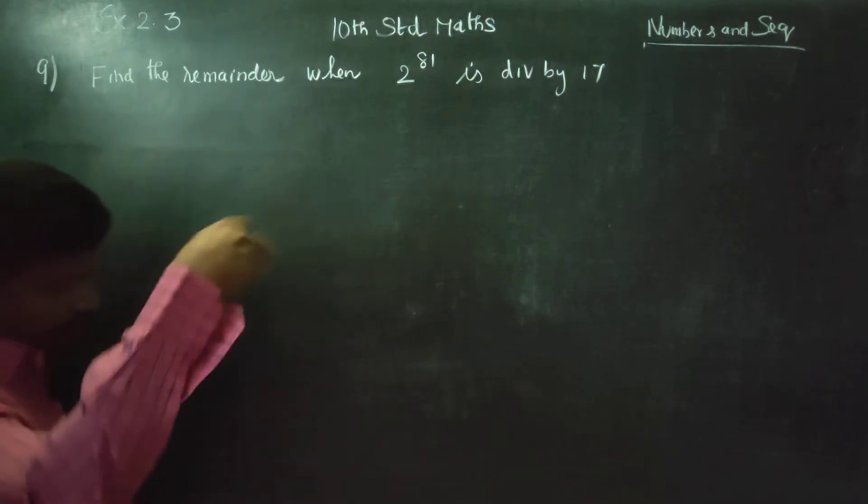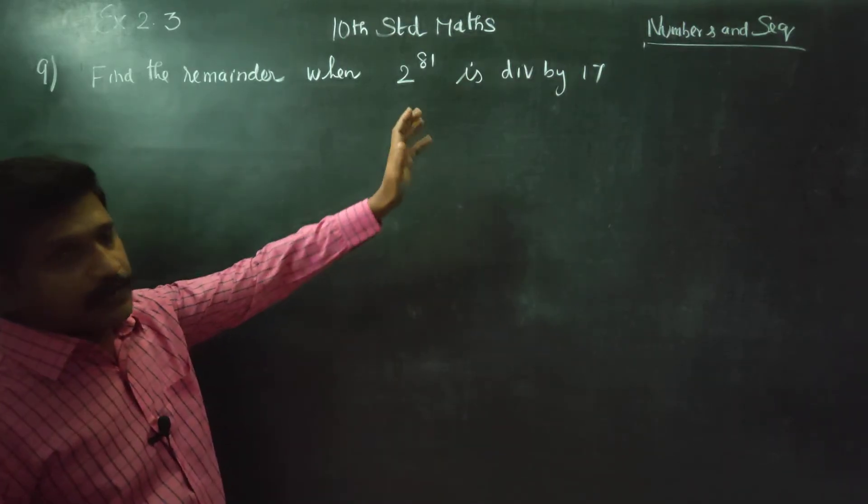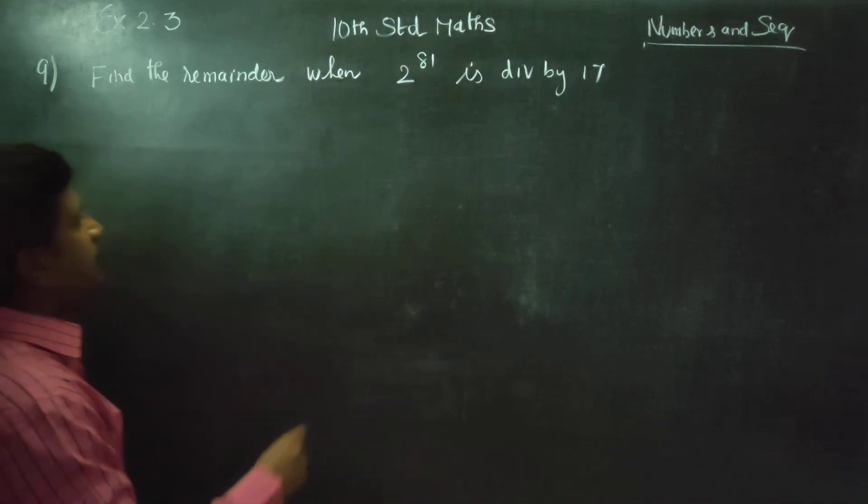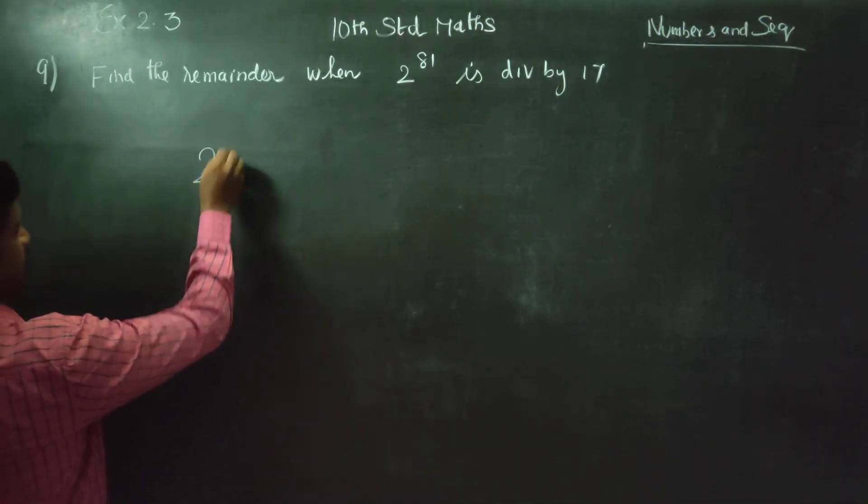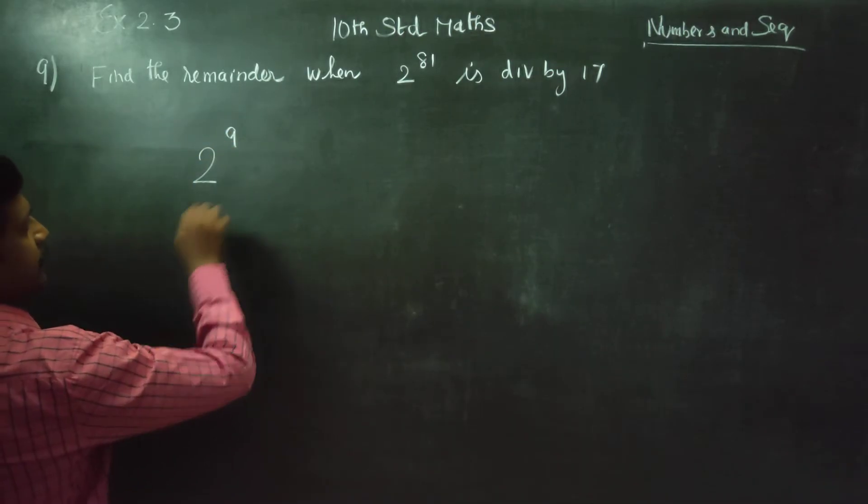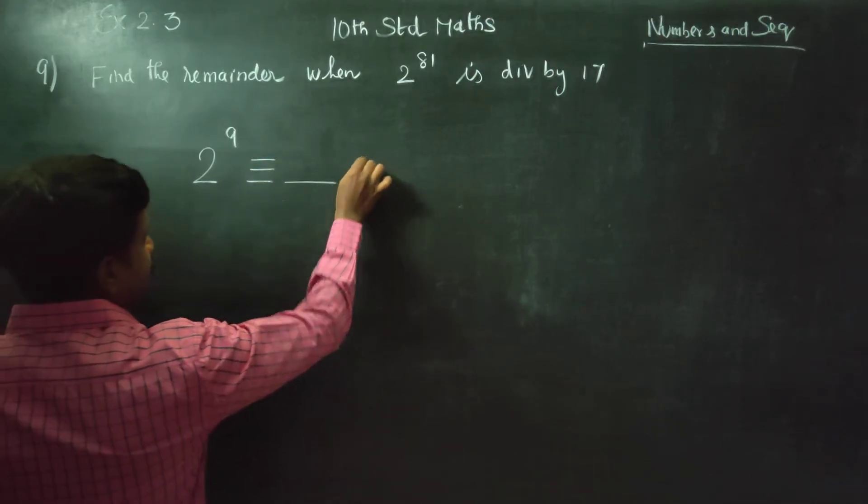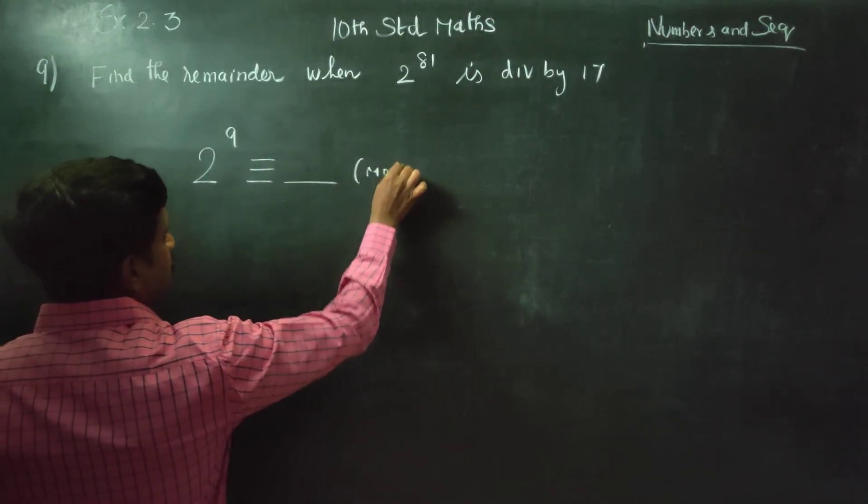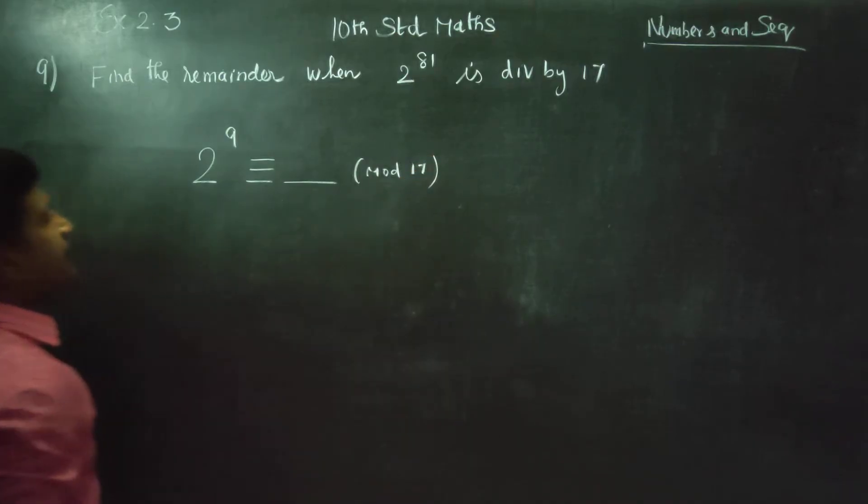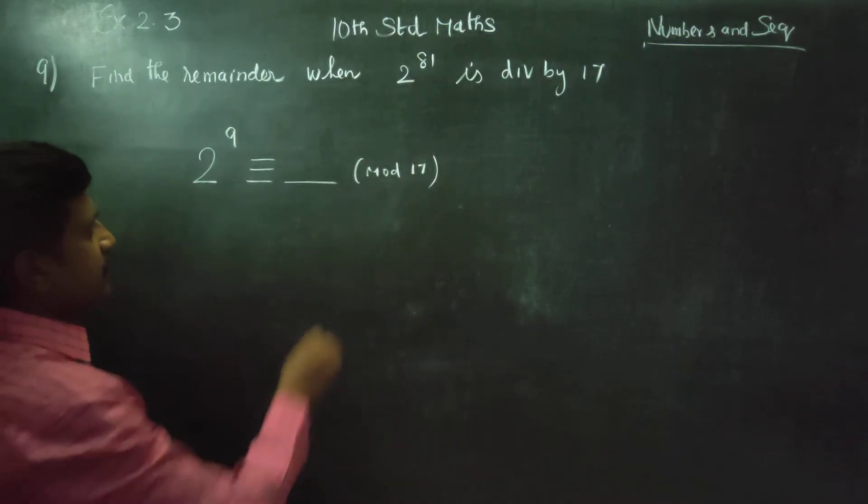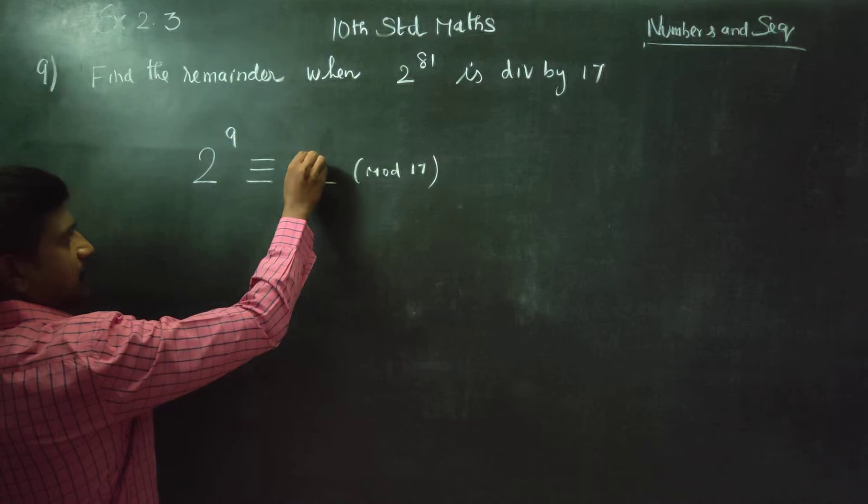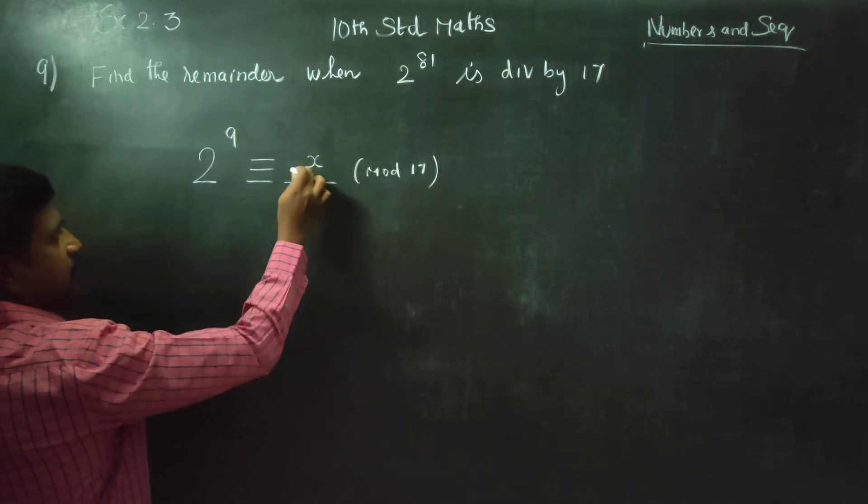2 into 2 into 2, 80 times will be a very large number. So I am going to start with 2 power 9. 2 power 9 mod 17, first let's start. What is 2 power 9? This is the first step.